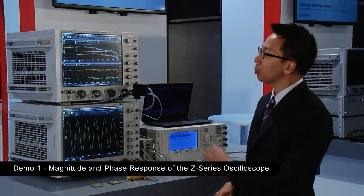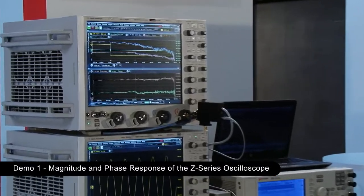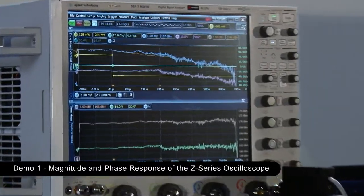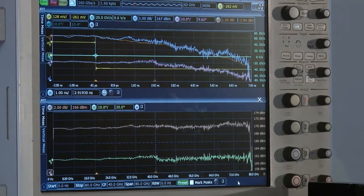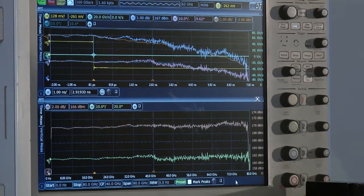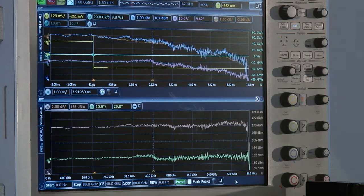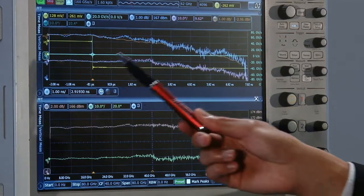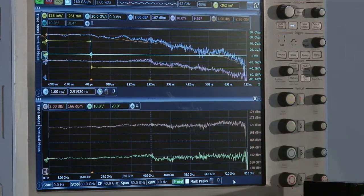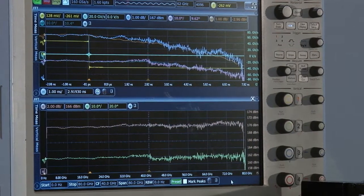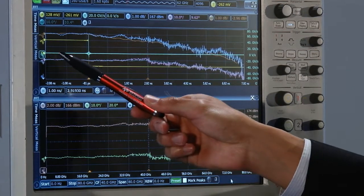So first, we're going to show you the magnitude and phase response of the Z-series oscilloscope up to 63 GHz. We have a step generator that is generating a five picosecond step into the 63 GHz channel of the oscilloscope. So as you can see on the screen, we have a fast step response, which we then differentiate to generate the impulse response in the green color waveform.